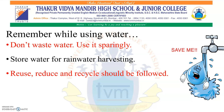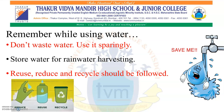Reuse, reduce and recycle should be followed — these three words are very important to understand. Reduce means to use less water. For example, take shorter showers and turn off the water while soaping hands and brushing teeth. Reuse means to reuse water from old drinking bottles, or you can reuse the water that you have used for washing vegetables to water the plants.